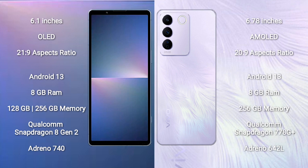Sony Xperia 5 Mark 5 runs on the Android 13 operating system. VOV29 also runs on the Android 13 operating system. Sony Xperia 5 Mark 5 comes with 8GB RAM and 128GB to 256GB internal storage.